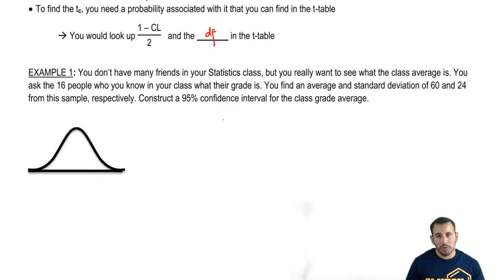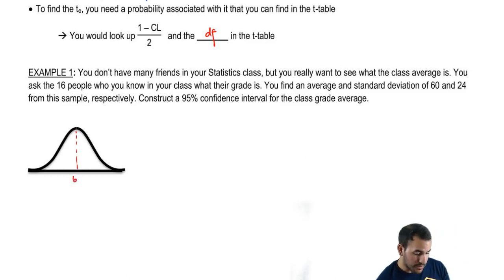Example 1: You don't have many friends in the statistics class, but you really want to see what the class average is. You ask the 16 people you know in the class what their grade is. You find an average and standard deviation of 60 and 24 from the sample, respectively. Construct a 95% confidence interval for the class grade average. So, our midpoint is 60. These are x-bars. These are t's.